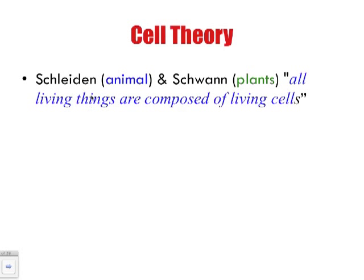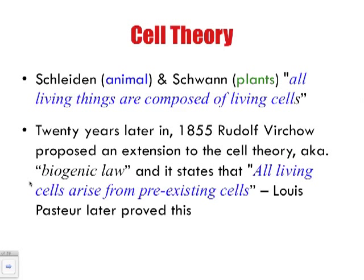This brings us to the cell theory. All living things are made up of cells — that's one of the most important aspects. Two scientists published individual papers: Schleiden focusing on plant cells and Schwann focusing on animal cells. Both stated independently that all living things are composed of living cells. Later, a scientist named Virchow extended the cell theory with what is referred to as the biogenic law, which states that all living cells arise from pre-existing cells.